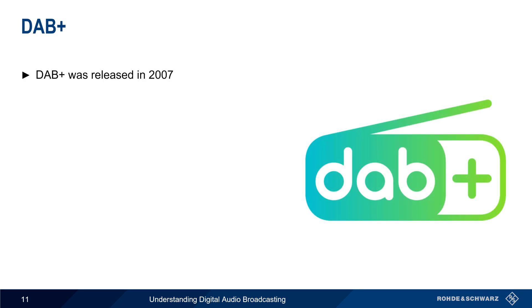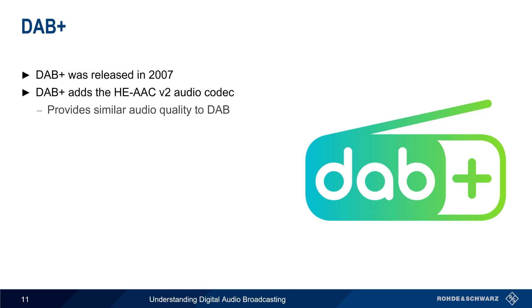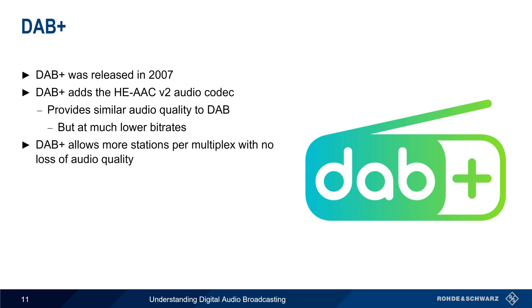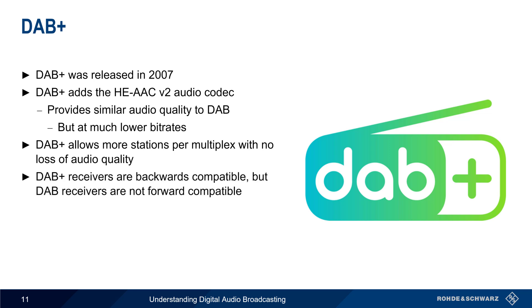DAB was relaunched in 2007 as DAB+, which adds the HE-AAC v2 audio codec. This codec provides similar audio quality to DAB but at much lower bit rates, and thus DAB+ allows more stations per multiplex with no loss in audio quality. It's also worth noting that while DAB+ receivers are generally backwards compatible with DAB, older DAB receivers are not able to receive DAB+ broadcasts.